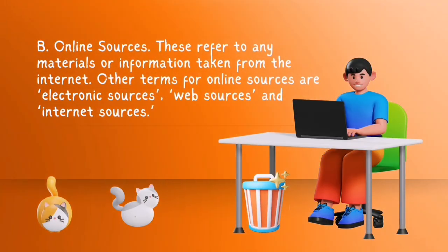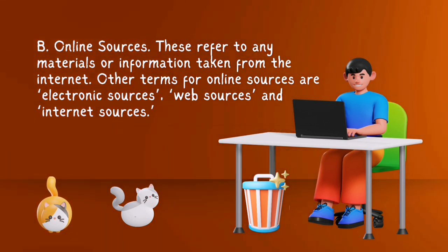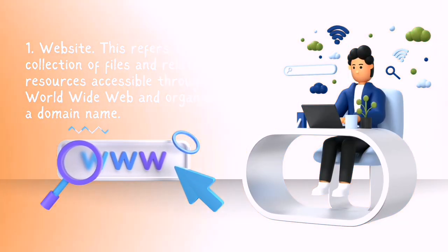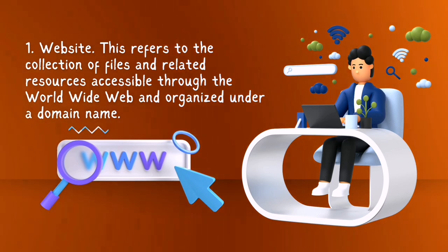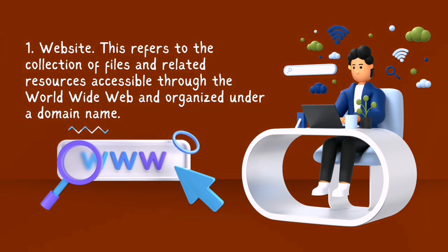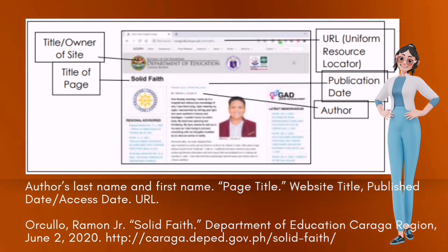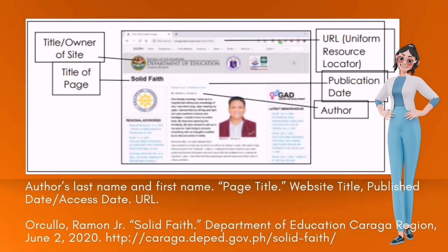B. Online sources — these refer to any materials or information taken from the internet. Other terms for online sources are electronic sources, web sources, and internet sources. One: Website — this refers to the collection of files and related resources accessible through the World Wide Web and organized under a domain name. This is the sample format of writing a website bibliography: author's last name and first name, page title, website title, published date or access date, URL. Example: Cullo, Ramon, Jr. Solid Faith. Department of Education Kariga Region. June 2, 2020. [URL].